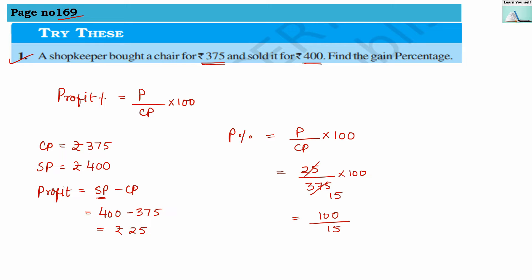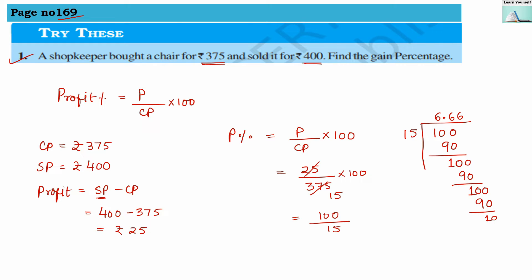Dividing 100 by 15: 15 sixes are 90, giving 6 with remainder 10. Taking a decimal point and bringing down zeros, the division continues repeating. We get 6.666 recurring, which we round off to 6.667. So the profit percentage is 6.667%. This is our answer.